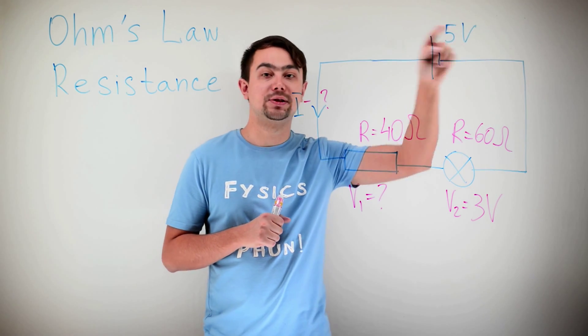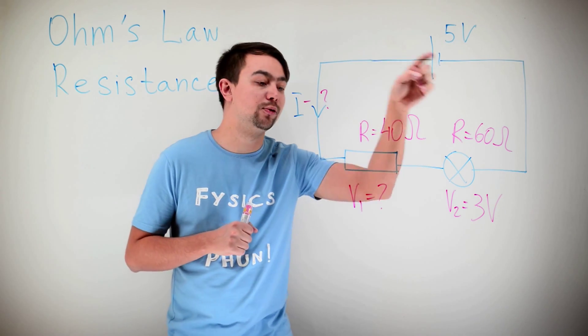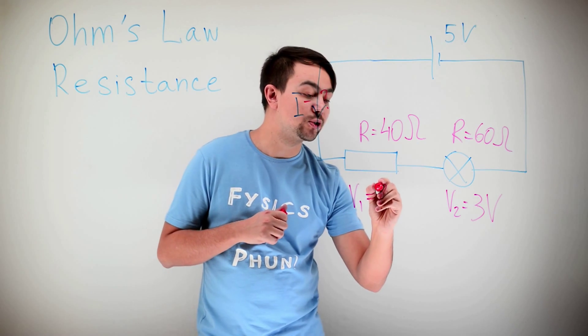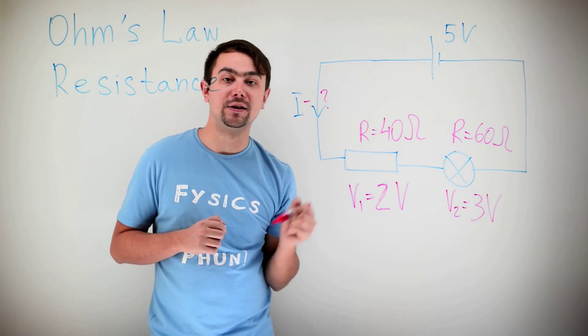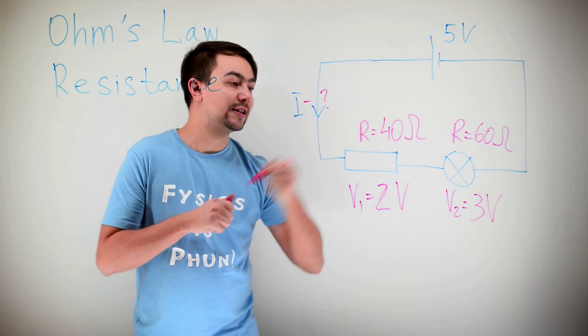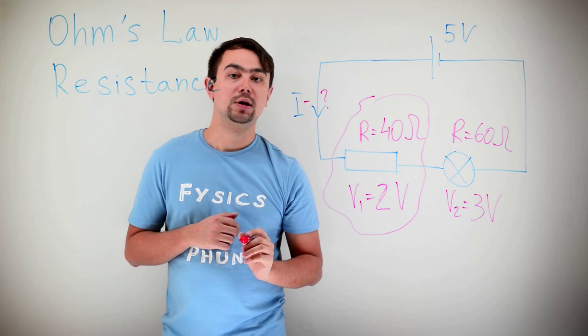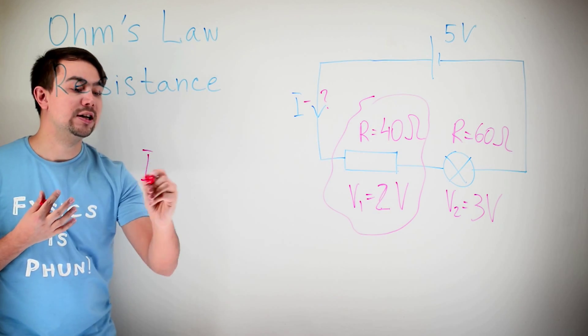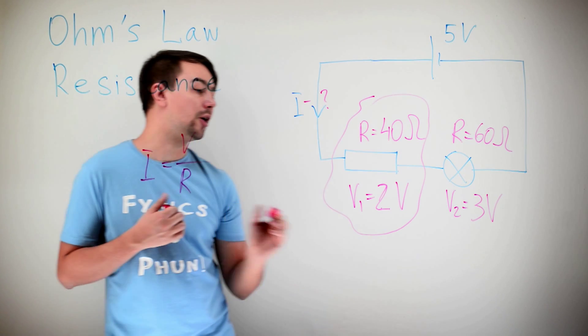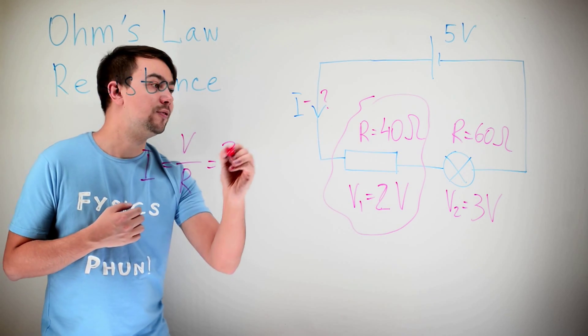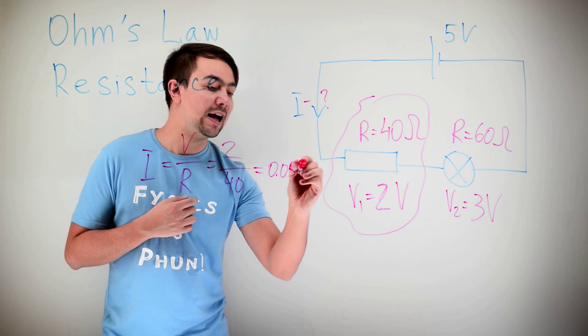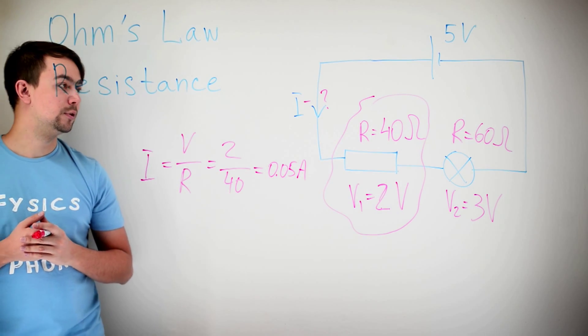If we have a 5 volt battery, that means it gives 5 joules for each coulomb of charge, and 3 volts are lost here, that simply means that the voltage on this resistor is 2 volts. 2 and 3 make 5. What's for the current? To find the current, let's look at this element. We use Ohm's law. Current is directly proportional to voltage and inversely proportional to resistance, V divided by R. So it's 2 divided by 40, that gives us 0.05 amps, or amperes.